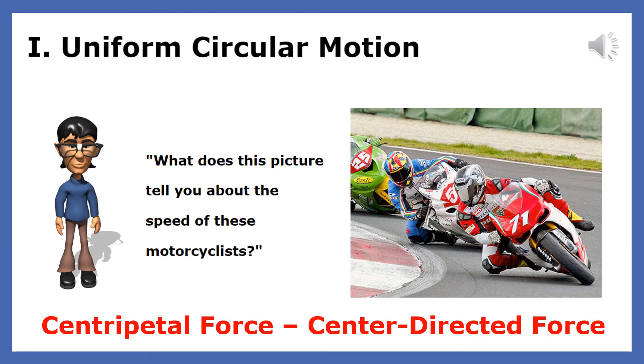Take a look at these motorcyclists. You can tell they are traveling at a tremendous speed. The greater the speed, the larger the center-directed or centripetal force needed to move in a circle. The centripetal force comes from the friction between the tires and the road. They lean in this way to counteract the torque produced by the centripetal force.